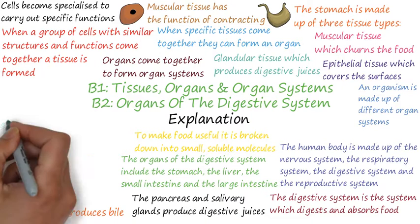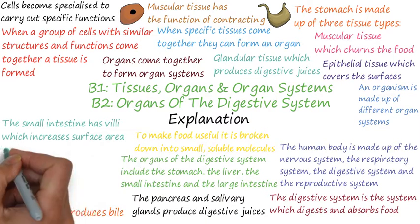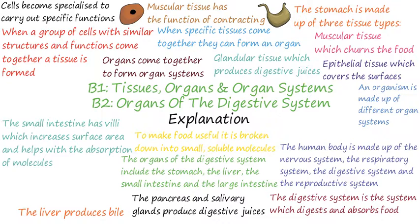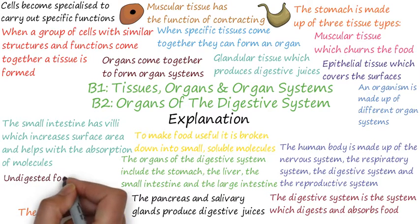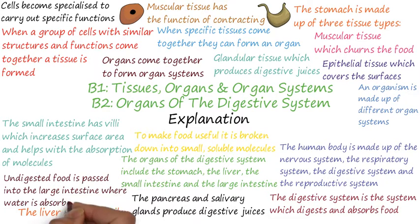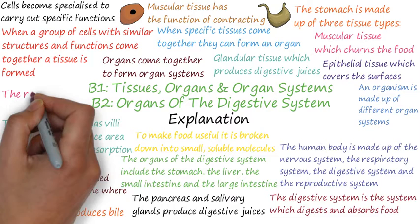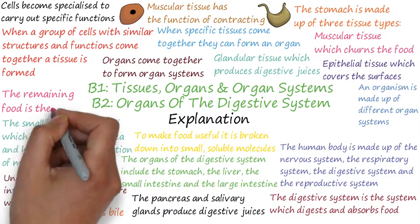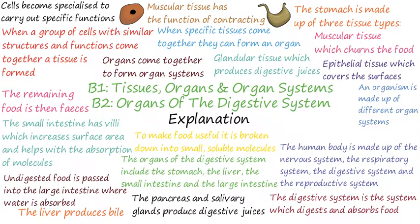The main part of digestion takes place in the stomach and the small intestines. The wall of the small intestine has folds in it which are called villi. These villi increase the surface area of the small intestine to help with the absorption of soluble molecules into the blood. The digestive system also has muscular tissue which helps to move the food along. Undigested food is passed into the large intestine where water is absorbed from it. The remaining food is then faeces and this is passed back into the environment through the rectum and anus.